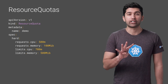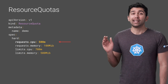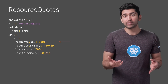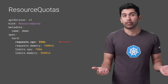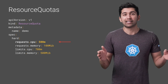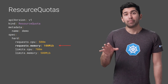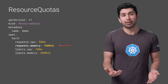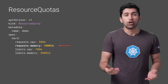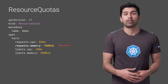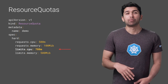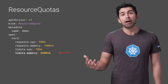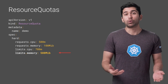A quota for resources might look something like this, with four sections. Request.cpu is the maximum combined CPU request that all containers in the namespace can have — for example, 50 containers with 10m requests, five containers with 100m requests, or one container with 500m requests, as long as the total is under 500m. Request.memory is the maximum combined memory request for the namespace. Limits.cpu is the maximum combined CPU limits for all containers, and limits.memory is the maximum combined memory limits for all containers in the namespace.